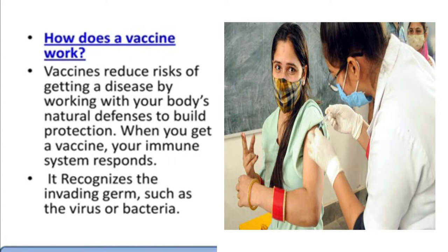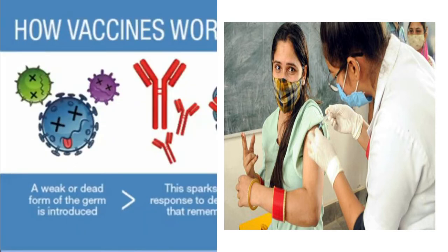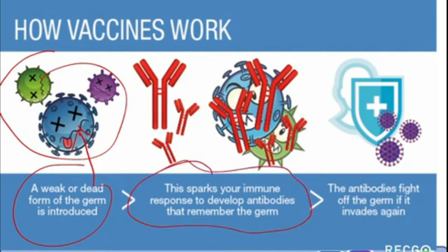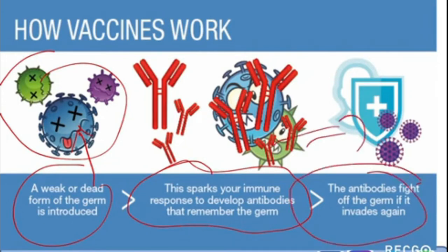How does a vaccine work? A vaccine reduces the risk of getting a disease by working with your body's natural defenses to build protection. When you get a vaccine, your immune system responds and recognizes the invading germs such as a virus or bacteria. A weak or dead form of the germ is introduced into your body. This sparks your immune response to develop antibodies, and your cells as well as T cells remember the germ, generating antibodies to fight the germs that invade the body.